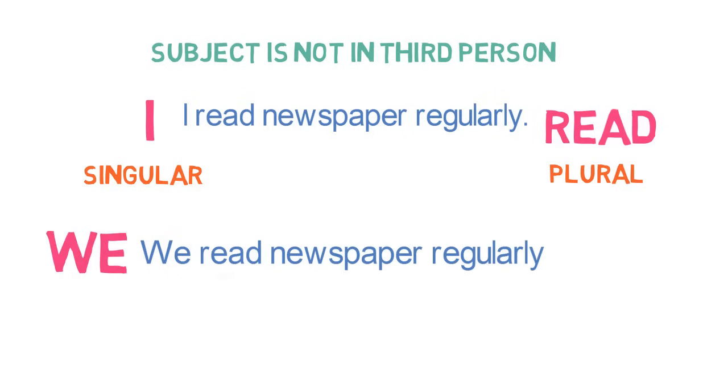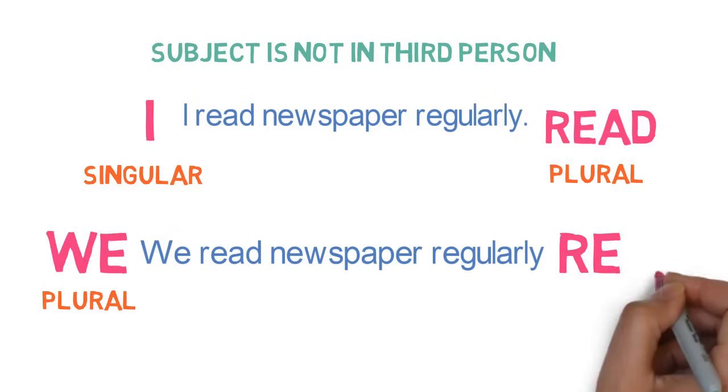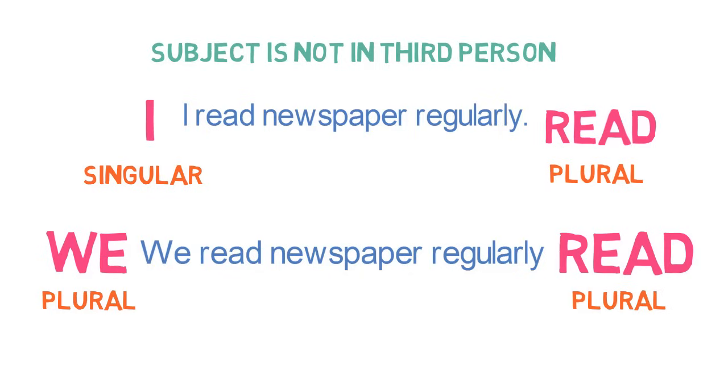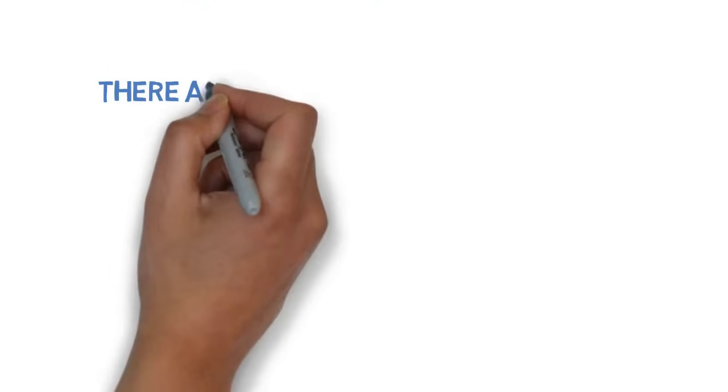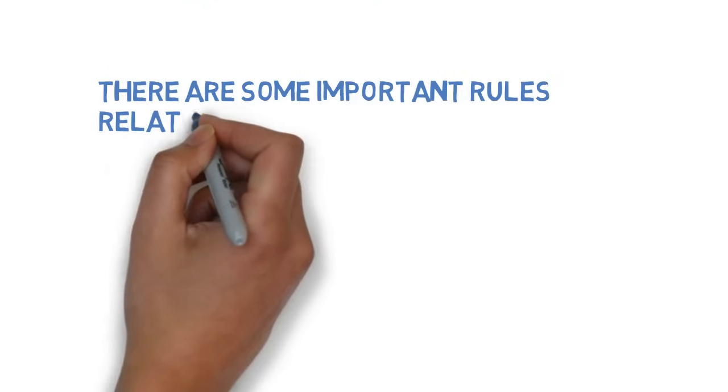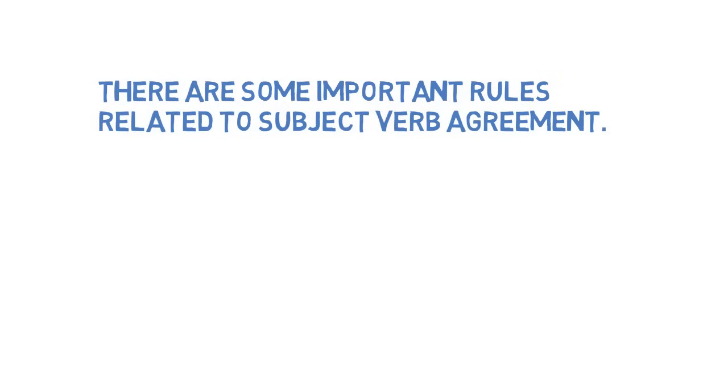So, in case of first and second person, there is no rule of singular subject, singular verb and plural subject must have plural verb. Please remember this concept also. There are some important rules related to subject verb agreement. Those rules we will discuss in next video.